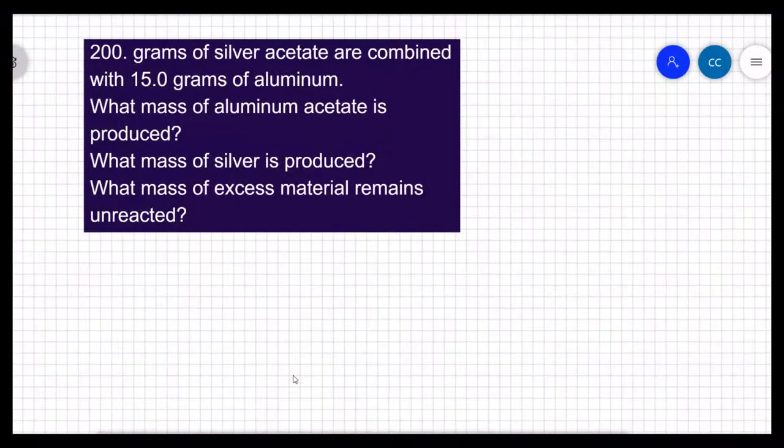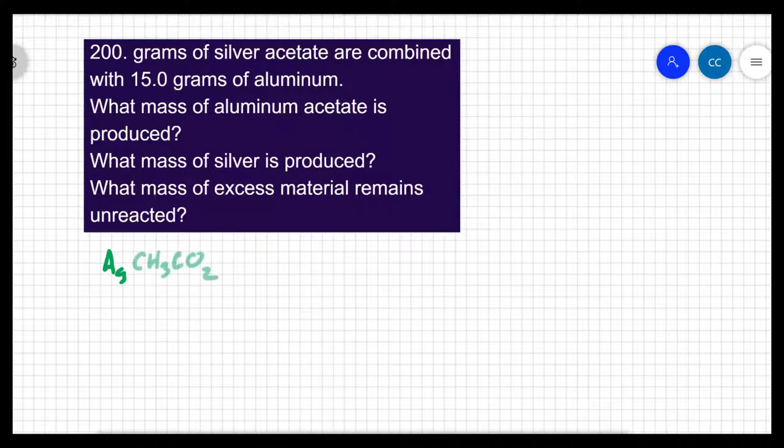Like always, we have to begin with a balanced equation. Silver acetate contains silver, which as an ion always forms a plus one charge. Acetate is a polyatomic ion that has a minus one charge. And I'm going to react my silver acetate with aluminum.